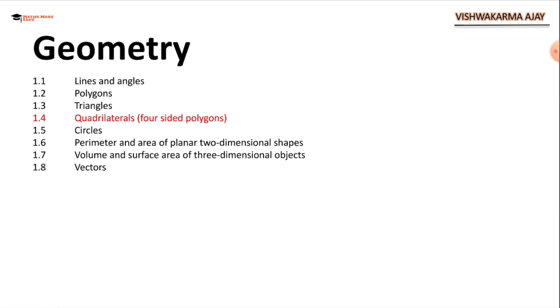Hello and welcome back to Maths Made Easy. Today we are in 4th lecture of Basic Geometry. Quadrilaterals or a 4 side polygon. In last lecture we completed our triangle, polygon and lines and angles.